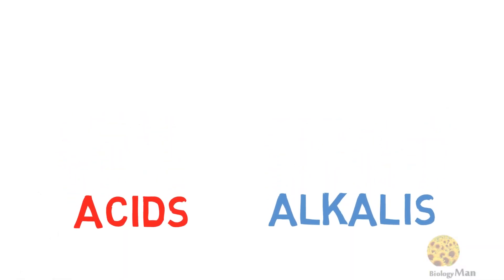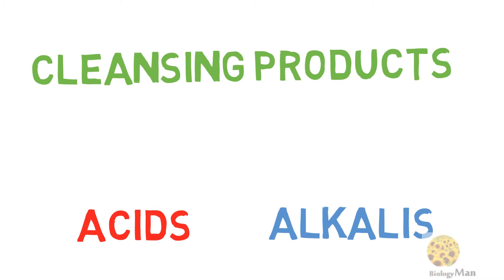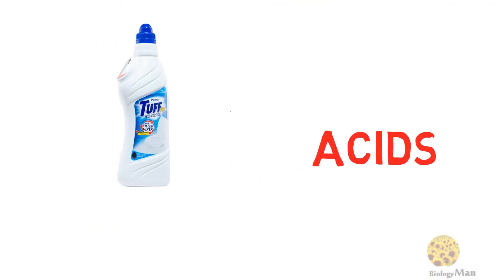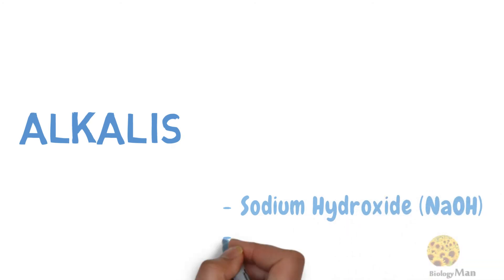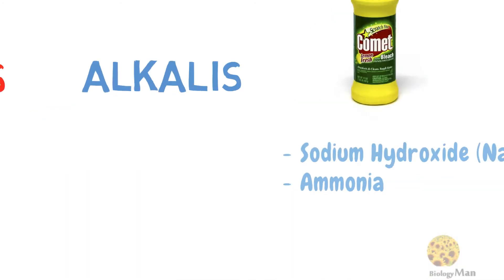Acids and alkalines are commonly found in different cleansing products. Most toilet cleansers contain hydrochloric acid. Sodium hydroxide or ammonia can be found in some kitchen cleansers.